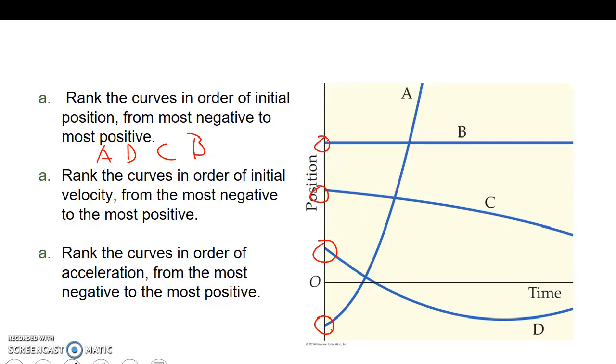Rank in order of initial velocity. We look at slope from the most negative to the most positive. Obviously, D is the most negative slope, so D is the most negative velocity. A is going to be the most positive velocity because that has a pretty high slope there. Now we look at B and C. B looks flat. C looks like it's going slightly down. So I will put C here and B here.